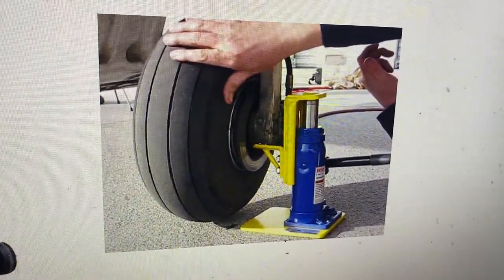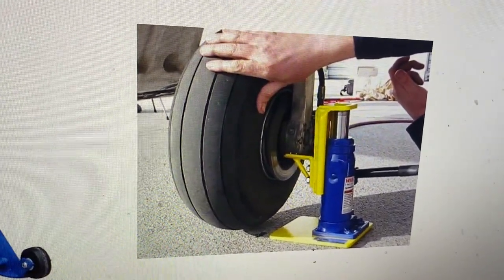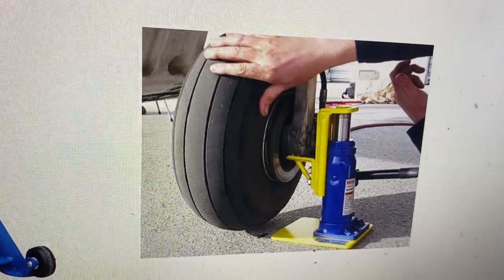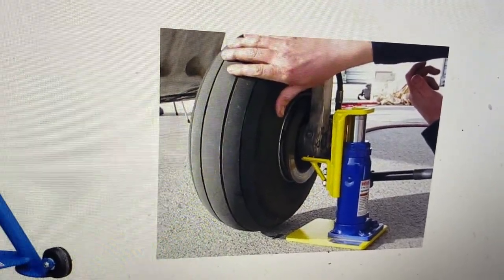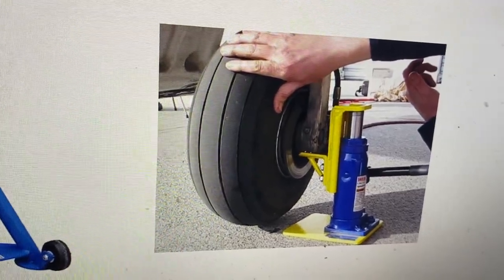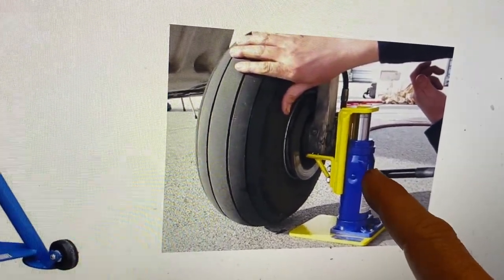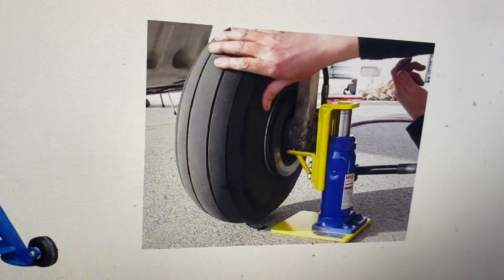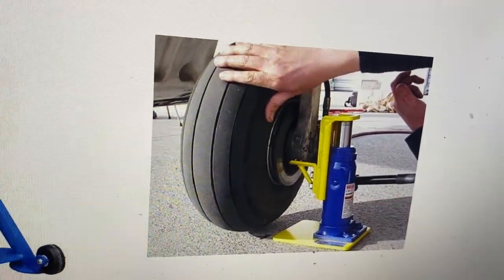On this one, again, one of the critical things is to make sure you chalk the other main tires or nose tire, whatever you're jacking. But only jack one tire at a time. Let's say you had both brakes to change, maybe left and right main brakes. Don't lift them both with these. Do one side, get it completely done, put the aircraft back down, and then use one for the other side.